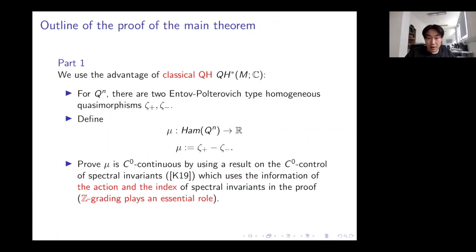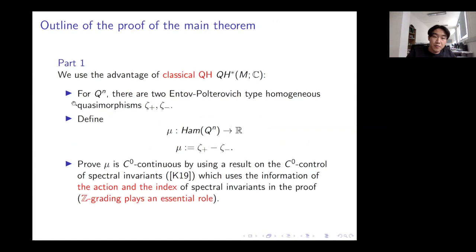Now let me outline the proof of the main theorem. The proof splits into two parts. In Part 1, I work with the classical setting. For quadrics, there are two different Entov–Polterovich type homogeneous quasimorphisms, call them ζ⁺ and ζ⁻. I define μ = ζ⁺ − ζ⁻. There are two continuity properties to establish: Hofer continuity and C⁰ continuity.